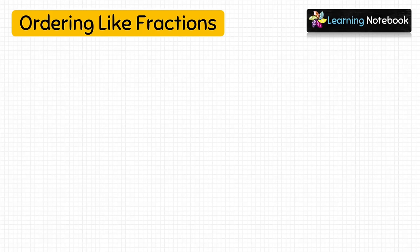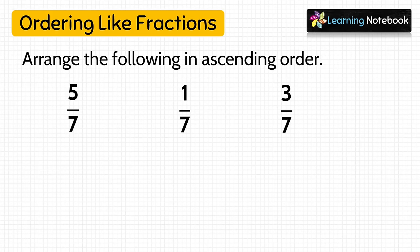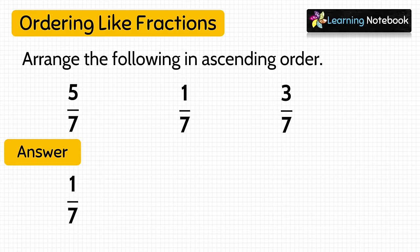Now let's see how to order like fractions. Arrange in ascending order: 5 by 7, 1 by 7, and 3 by 7. Since denominators are the same, we compare numerators. Smallest numerator is 1, so smallest fraction is 1 by 7. Next is 3 by 7, and then 5 by 7. That is the ascending order.